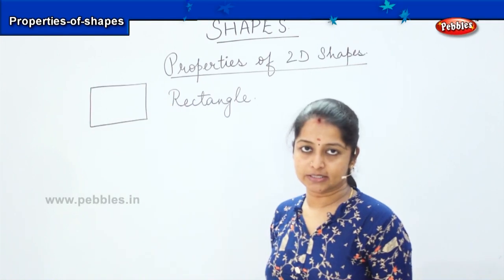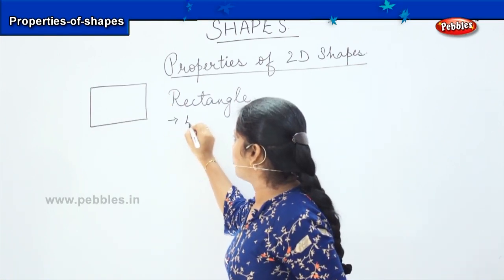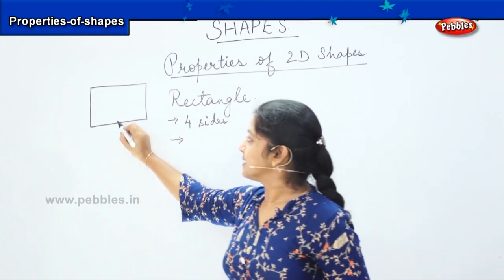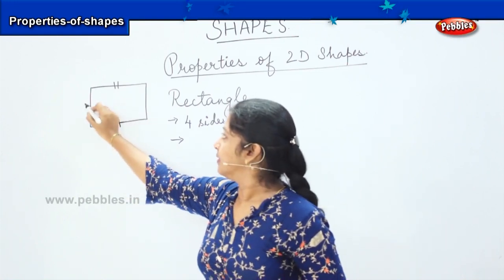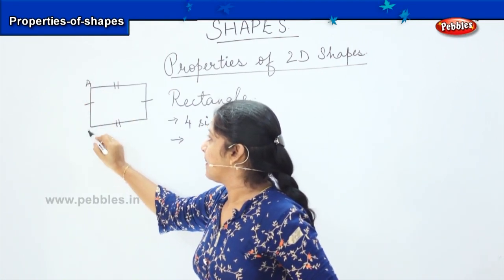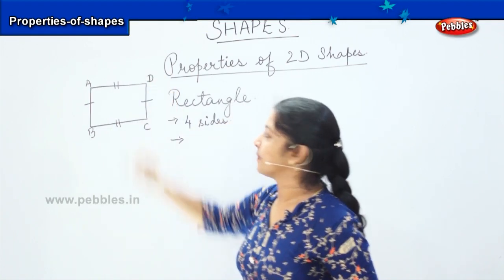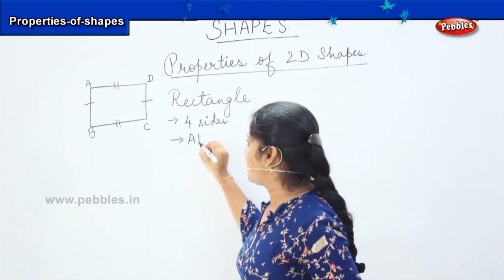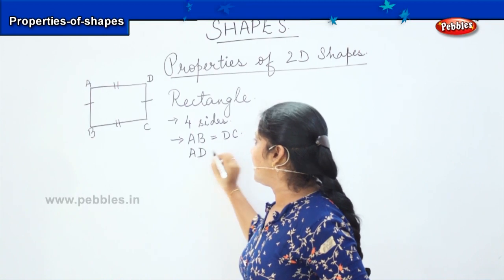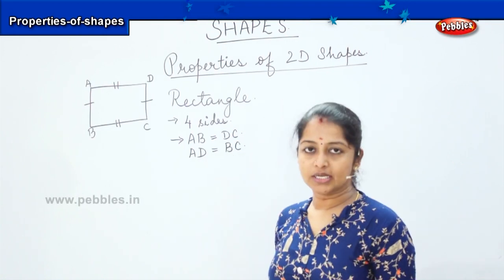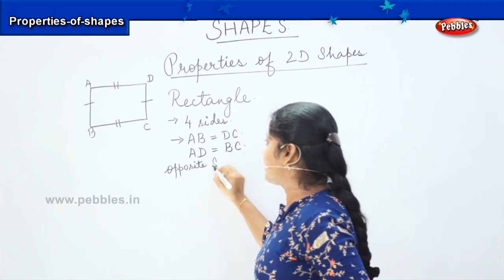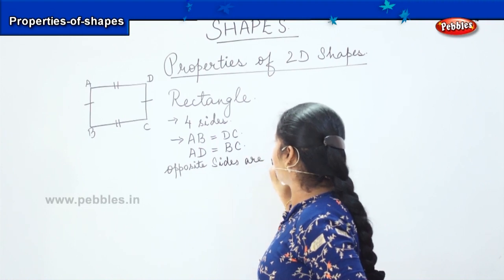So what are the features of a rectangle? How many sides does a rectangle have? It has got four sides. This side and this side are equal, and this side and this side are equal. To make it simpler, if I name the corners A, B, C, and D, I can say that AB is equal to DC, and similarly AD is equal to BC. So what does it mean? It means that opposite sides are equal.